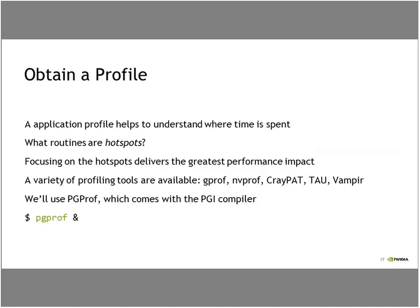The first step is obtaining an application profile, which really helps us understand where time is being spent. If you've done any parallel programming before, you may have encountered Amdahl's Law — basically a way of figuring out: if I speed up a certain percentage of my code by parallelizing it, what's the maximum performance benefit I can gain? Intuitively, parallelizing large time-consuming parts will have a larger overall impact. Identifying hot spots and focusing on them gives us the greatest impact.